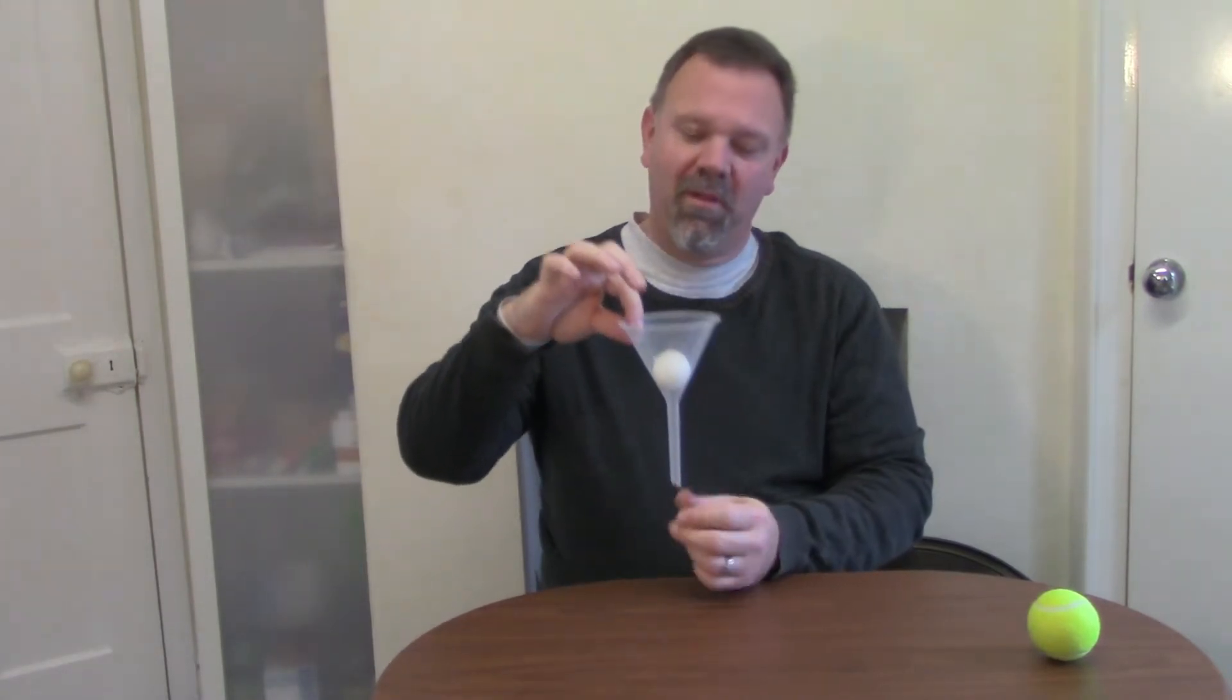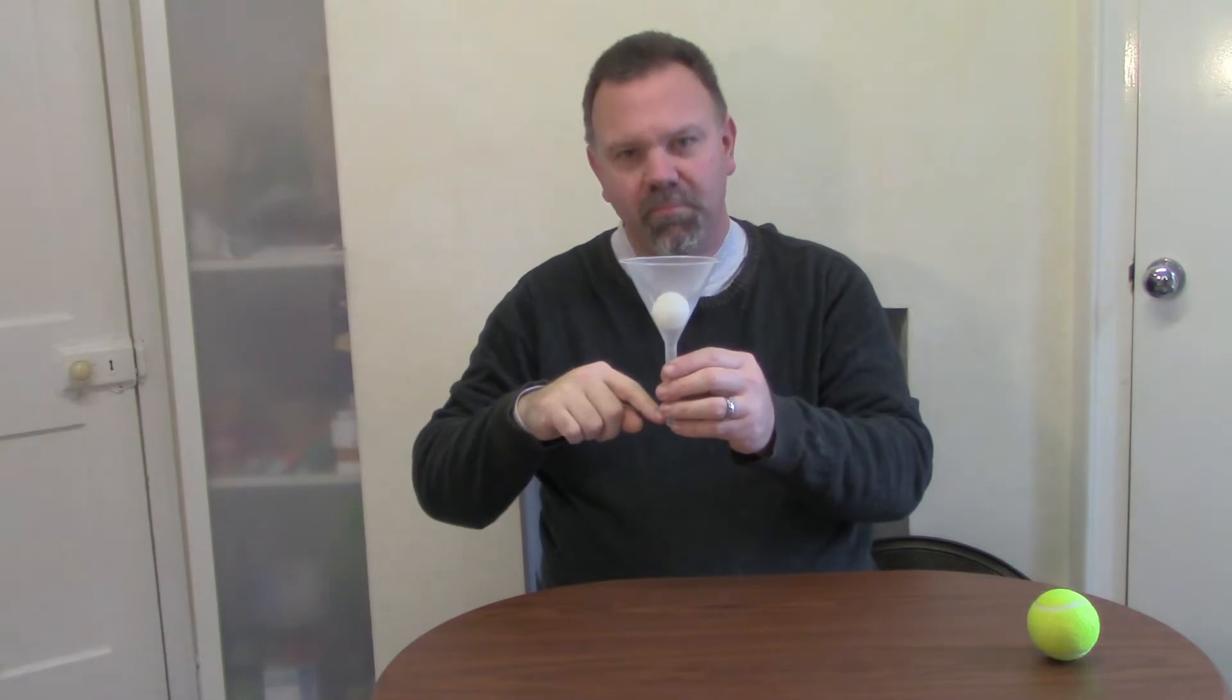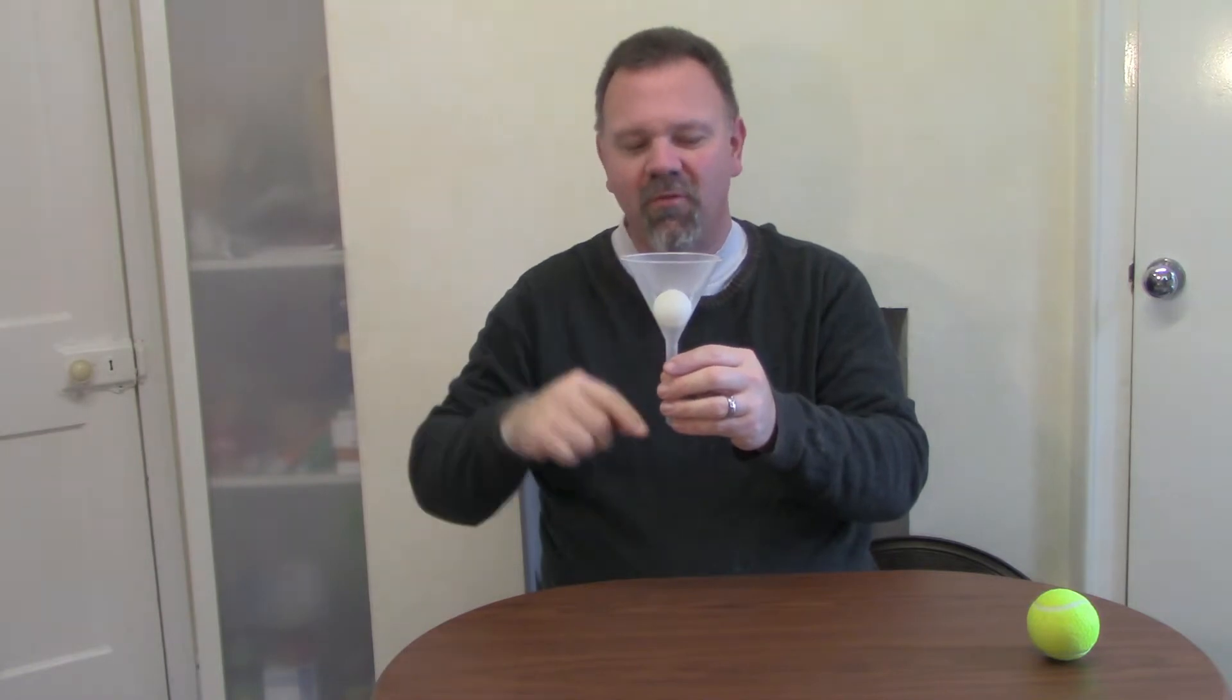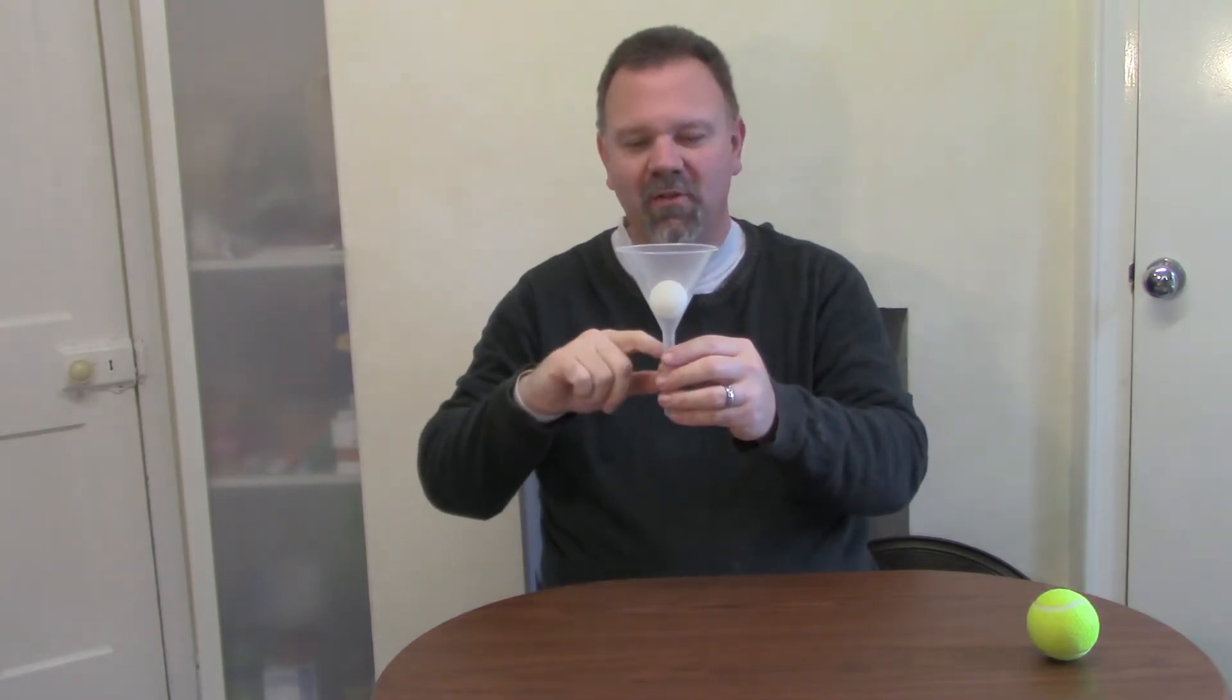So in order to do this, you put the ping pong ball into the funnel. What's going to happen is you're going to push air through. You can either cheat like I'm going to do in a moment using an air compressor or you can just blow through the tube which I'll show you what that looks like as well.